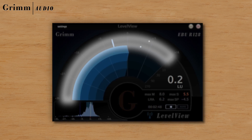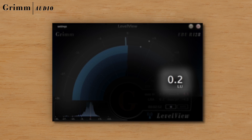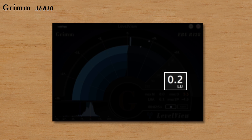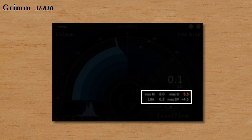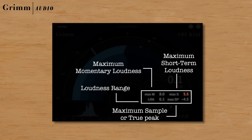Outside the rainbow meter a faster momentary loudness meter is shown. Next to the rainbow, the integrated loudness is shown in large digits — this is the main reading. The smaller numbers show the maximum level for momentary loudness, short-term loudness, peak level, and loudness range.